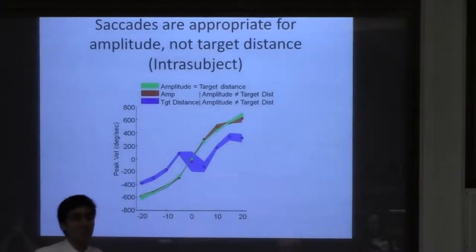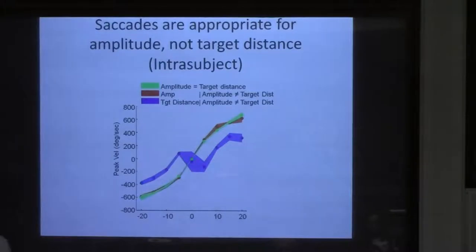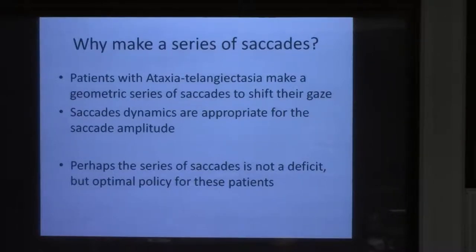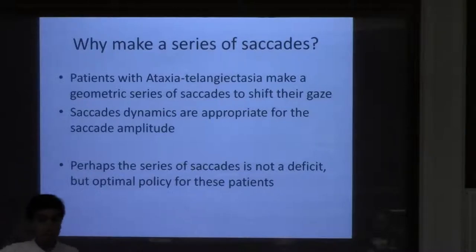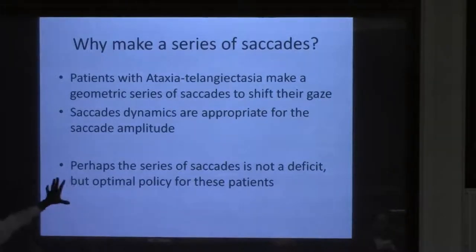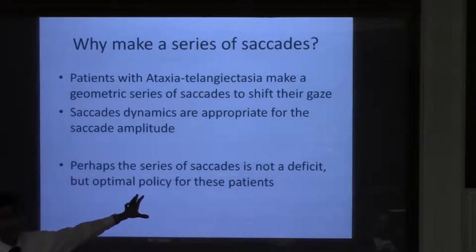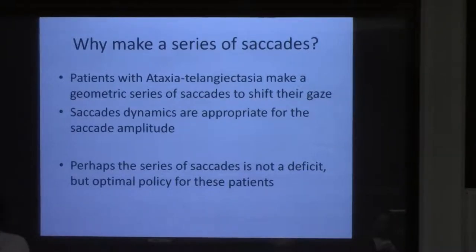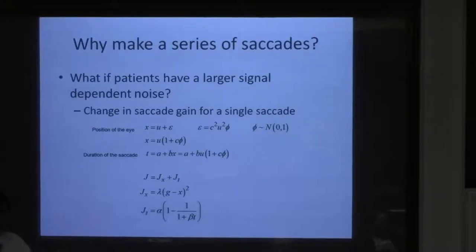So in summary of this part: patients with AT make a geometric series of saccades to shift their gaze — halfway, a little more, closer, then on target. The saccade dynamics look appropriate for the saccade amplitude, not the target distance. As the data suggests, maybe they're trying to go halfway. Perhaps this series of saccades isn't a deficit — maybe it's an optimal policy, something they're doing intentionally because it's somehow the right thing to do.